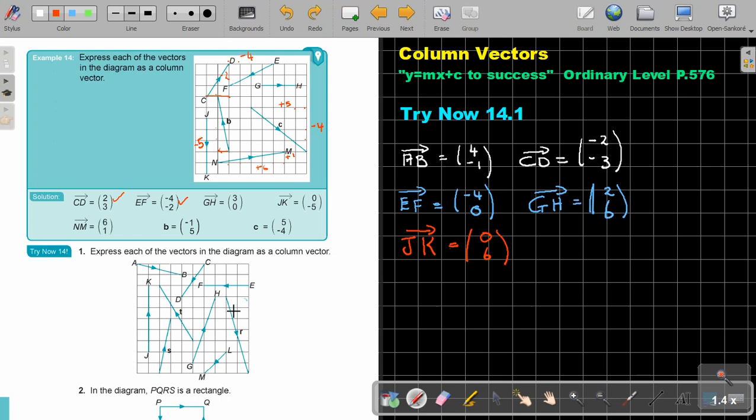And then LM. Let's just find LM. It's coming down. So it's going to be negative 2, negative 2. And then the next one.